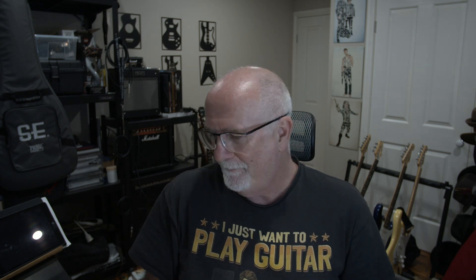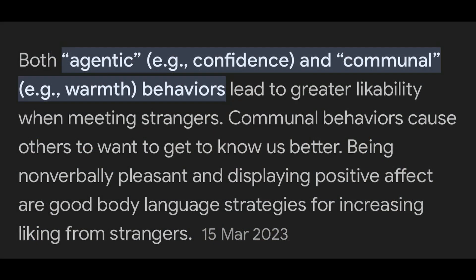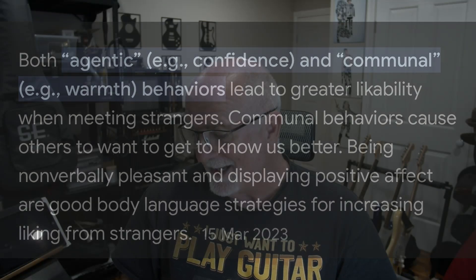The other one, which I think is probably better for a writing point of view because it's a slightly more technical understanding of likable: both magnetic, confident, and communal warmth behaviors lead to greater likability. When meeting strangers, communal behavior causes others to want to know this person better — being non-avoidably pleasant, displaying positive affect, and good body language are strategies for increasing liking of strangers.